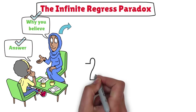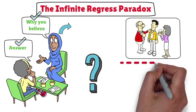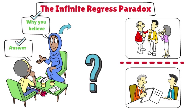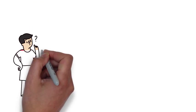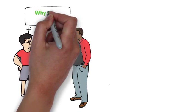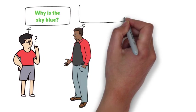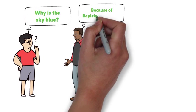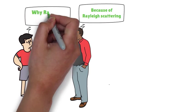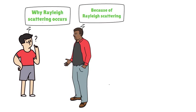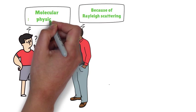This paradox makes us question whether we can ever truly justify our beliefs or if we're just stuck in an endless loop of reasoning. For example, consider a child asking why the sky is blue. You might explain it's because of Rayleigh scattering, which scatters sunlight in the atmosphere. But then the child may ask why Rayleigh scattering occurs, leading to an explanation about molecular physics.